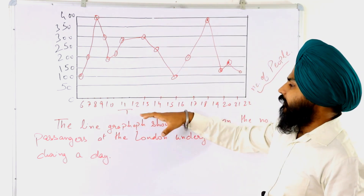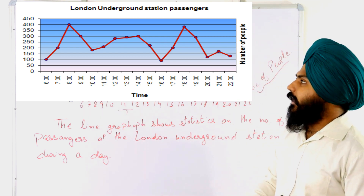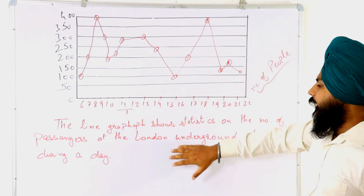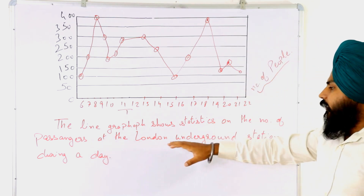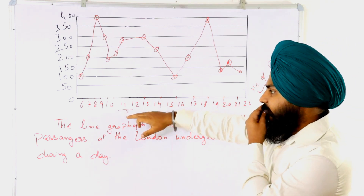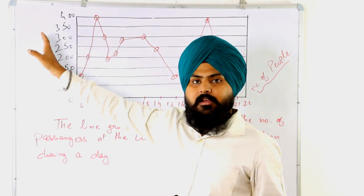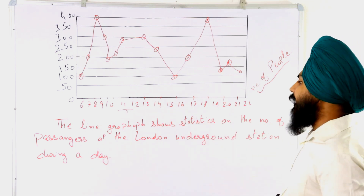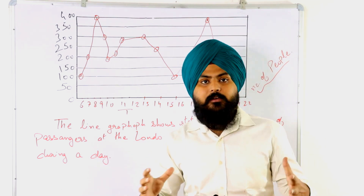This is the diagram — the actual diagram will be popped up on your screen and will be really accurate. Now here is the question: the line graph shows statistics on the number of passengers at the London Underground station during a day. This is the time from 6 hours to 22 hours, and the data is given as the number of people — 50, 100, 200 people and so on. Now let's see how we can write the introduction and start the line graph response.